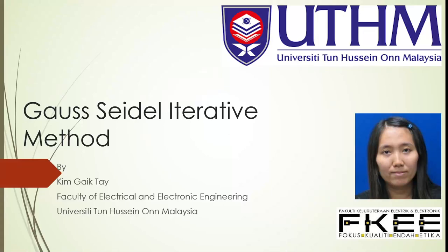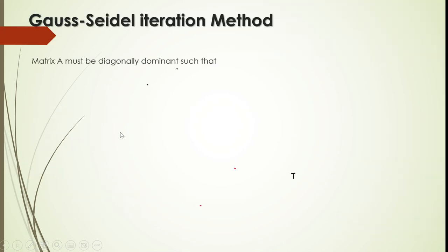We are looking at the Gauss elimination method. You can solve any kind of linear system where the matrix A has no restriction at all. The inverse matrix method is an exact method but requires a unique solution. The Thomas algorithm must be a tridiagonal matrix. Gauss-Seidel iterative method requires the matrix A to be diagonally dominant — not necessarily tridiagonal, but diagonally dominant.